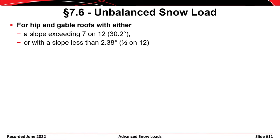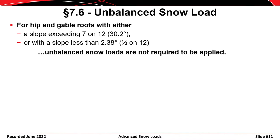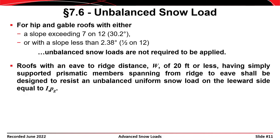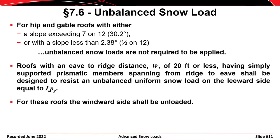For hip and gable roof systems that either have a really steep slope or almost no slope at all, unbalanced snow loads are not required to be applied. A steep slope is one that's a 7:12 pitch or greater, and a flat slope in this case is a half inch per foot. Roofs with an eave-to-ridge distance of 20 feet or less having simply supported prismatic members spanning from the ridge to the eave shall be designed to resist an unbalanced uniform snow load on the leeward side equal to I_S times P_G. For these roofs, the windward side shall be unloaded.